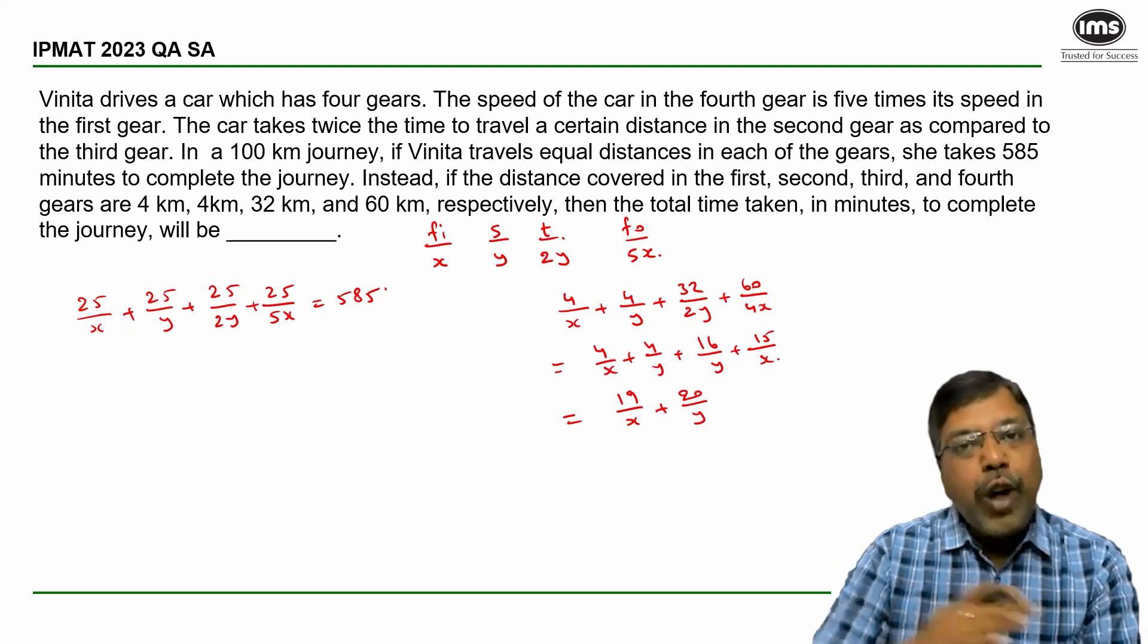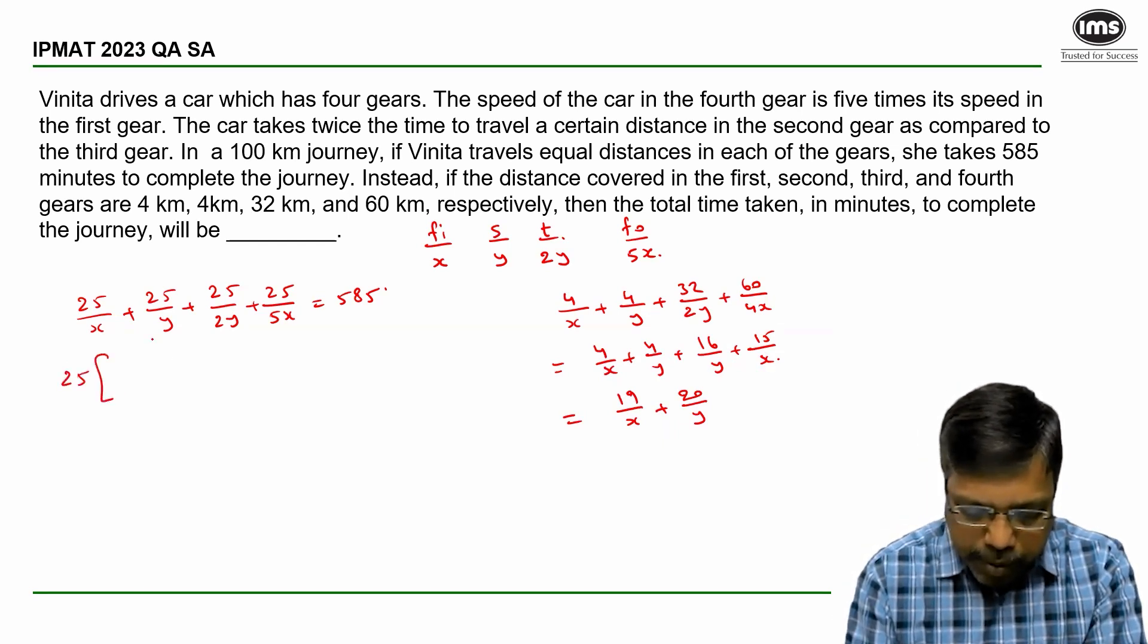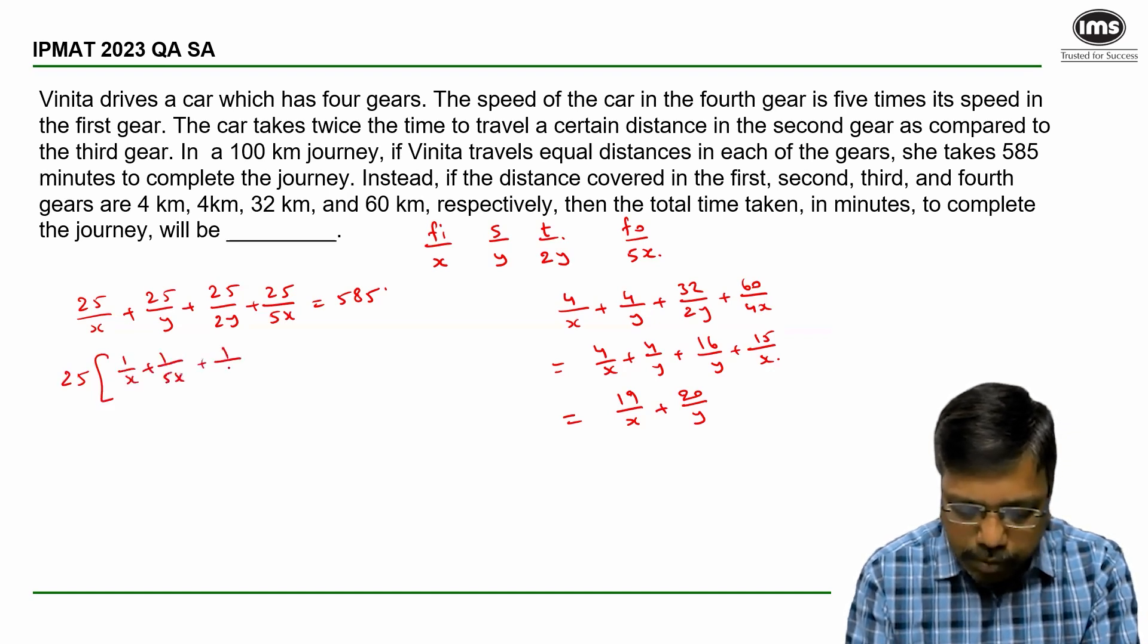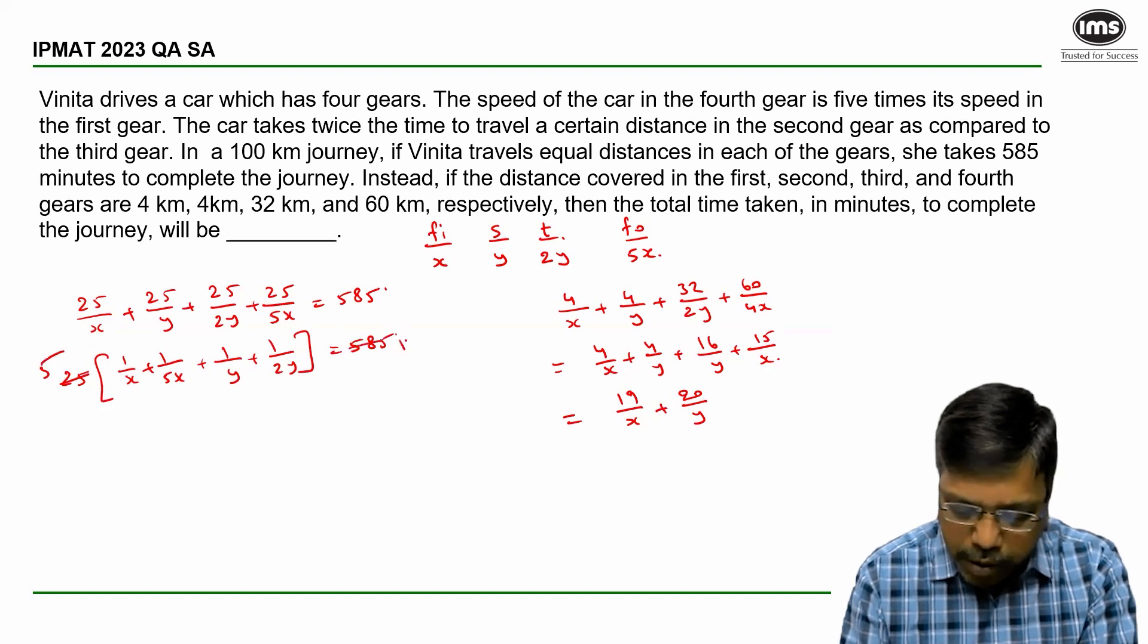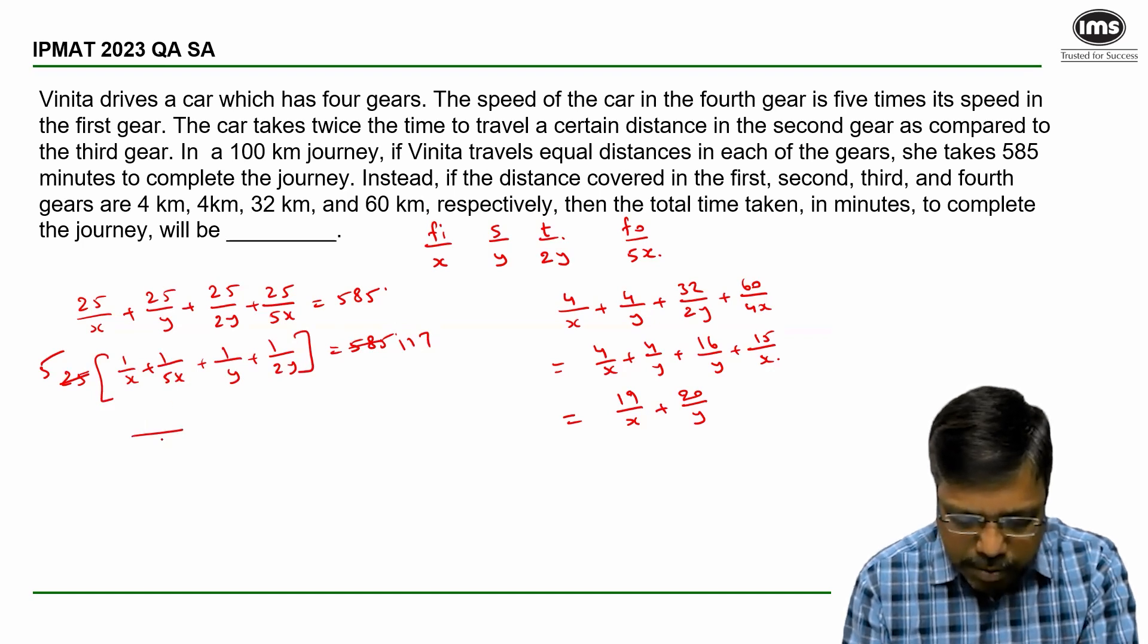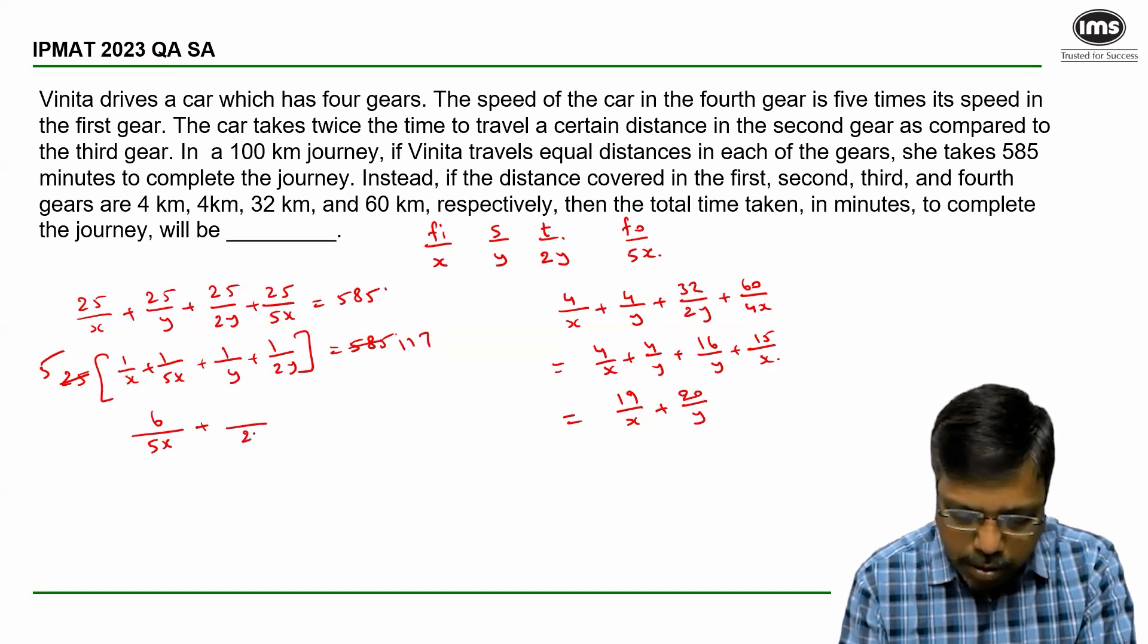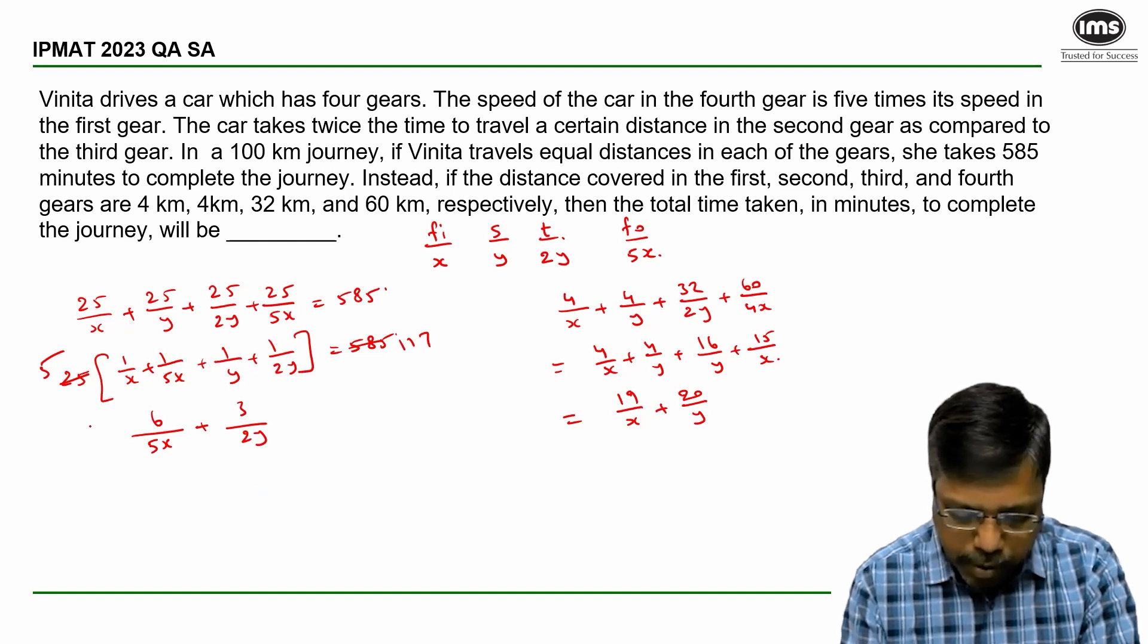So to calculate this value, I will use the earlier expression. So if I take 25 common, then I can write it as 1 by x plus 1 by 5x plus 1 by y plus 1 by 2y is equal to 585 divided by 25, which is 117. So 1 by x plus 1 by 5x becomes 6 by 5x plus 3 by 2y into 5 is equal to 117.